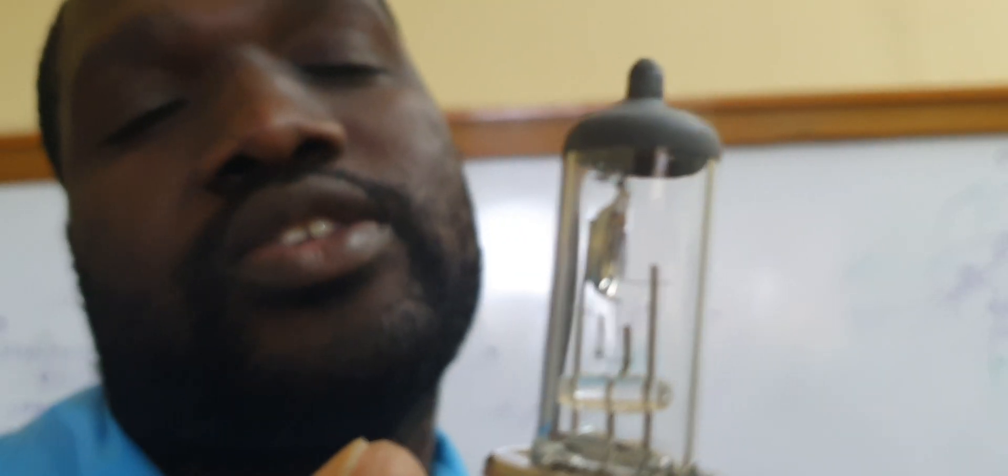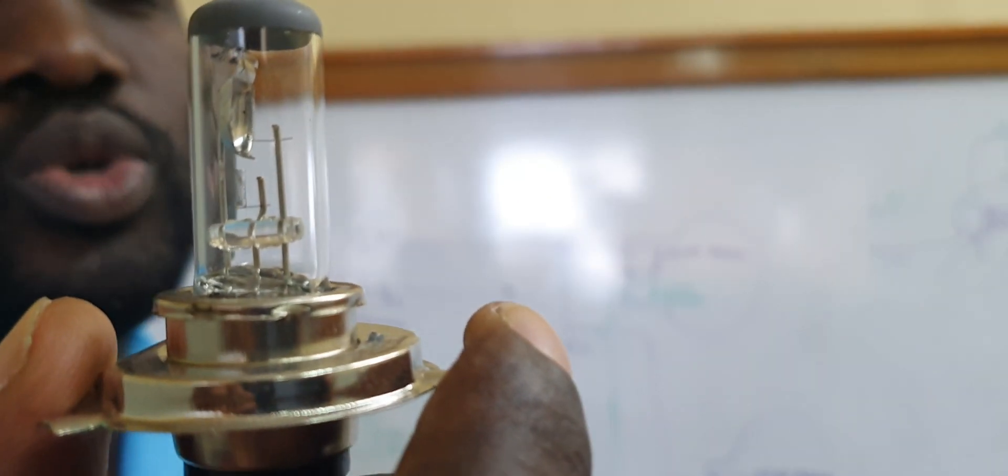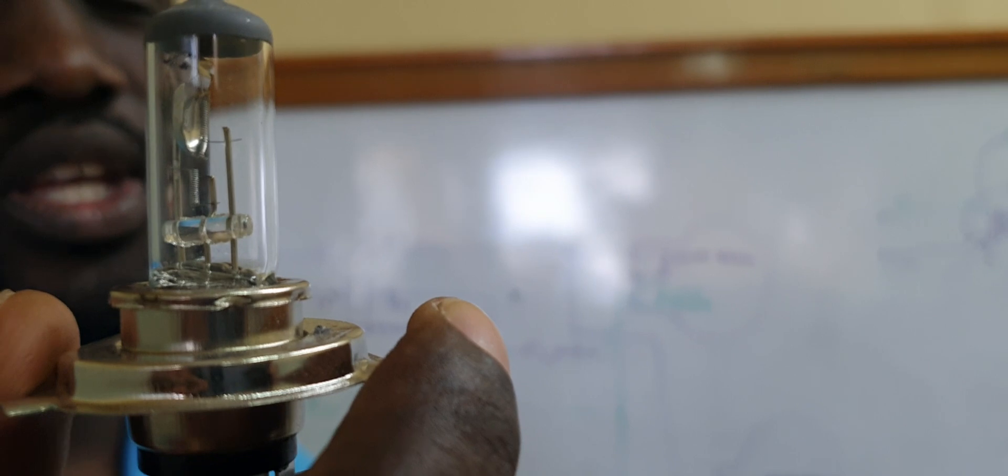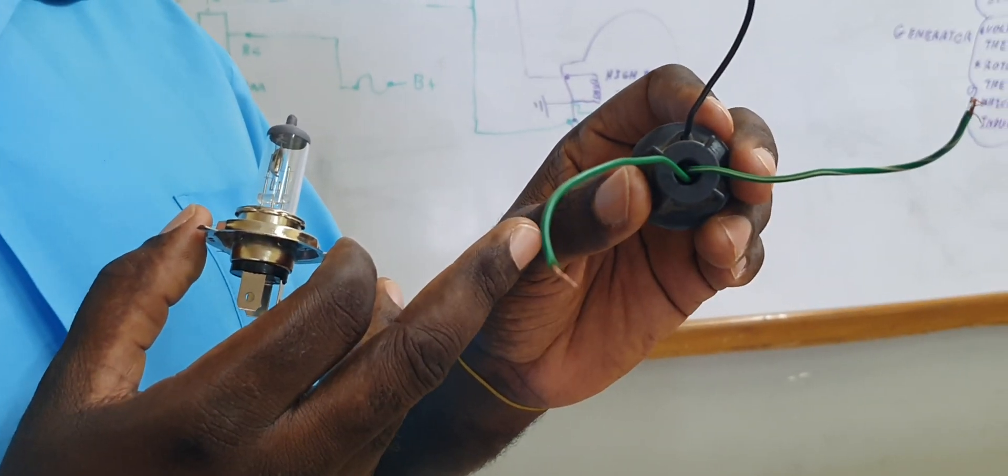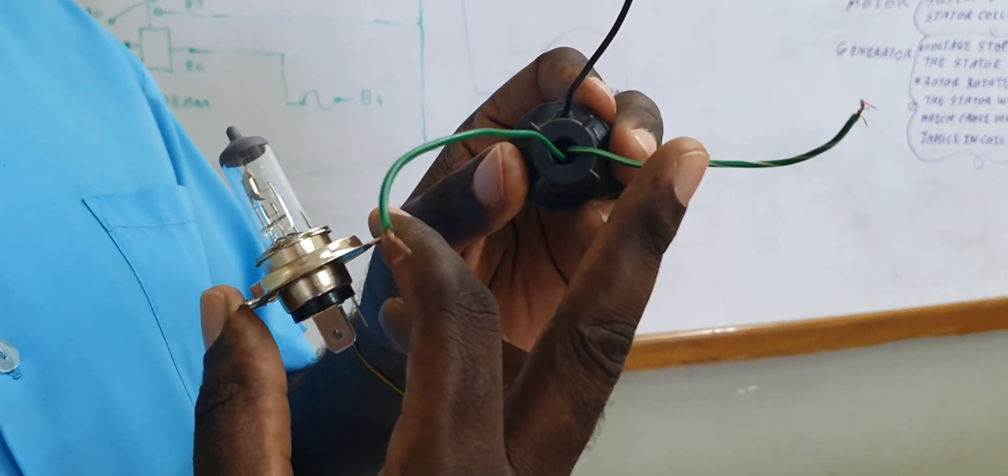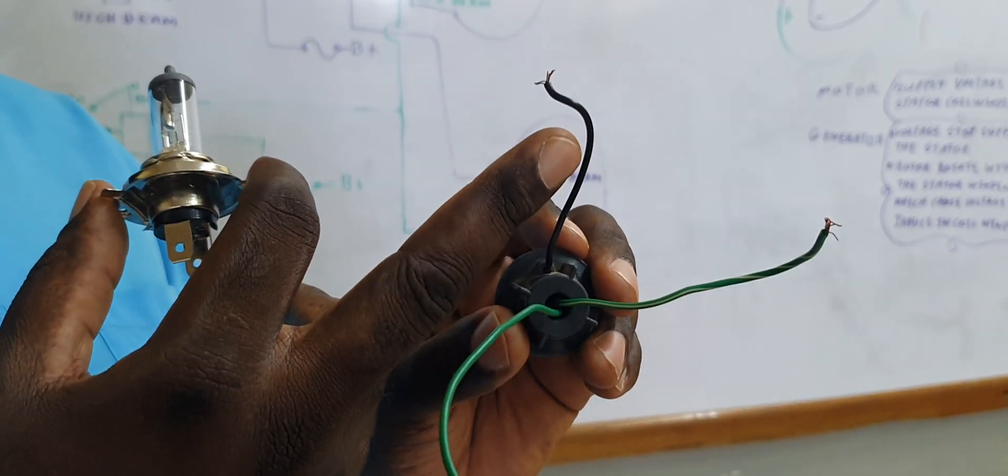The construction of these circuits is different when compared to a circuit that carries single filament because the connector would look something like this that has three prongs. So one would represent high beam, one would represent low beam, one would represent the grounds.